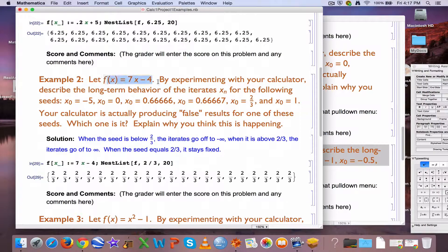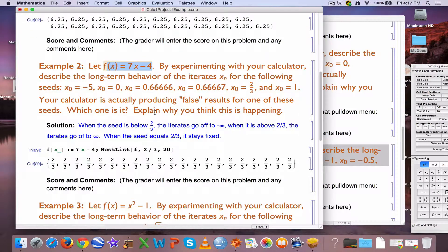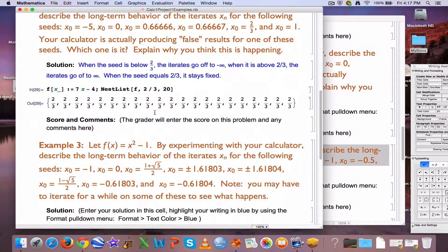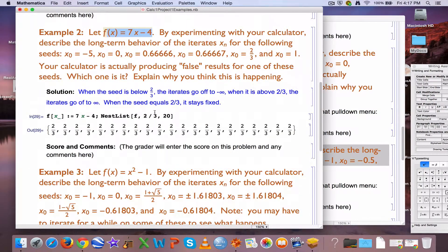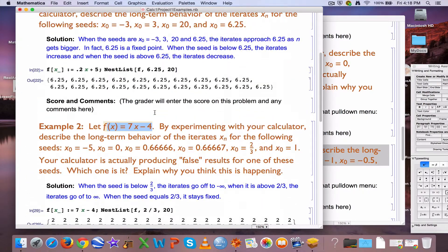In this example, for this function, 2 thirds is a fixed point. Though the behavior otherwise, if you are slightly different from the fixed point, was different from example 1 to example 2.